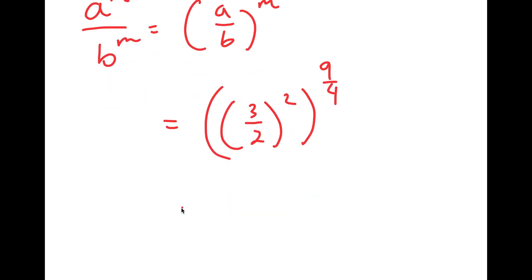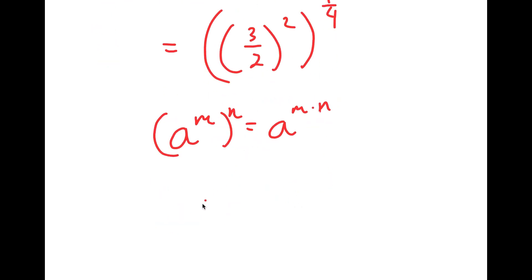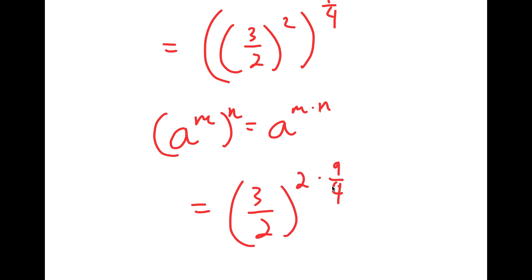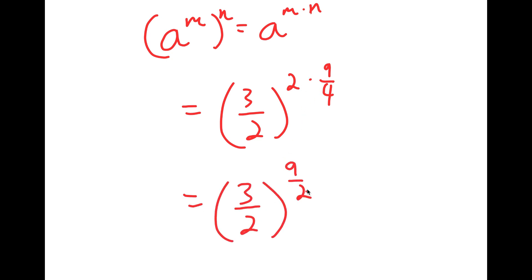Now, if I have something in the form a to the power of m to the power of n, this is equal to a to the power of m times n. So it's going to equal 3 over 2 to the power of 2 times 9 over 4, which is equal to 3 over 2 to the power of 18 over 4, which simplifies to 9 over 2.